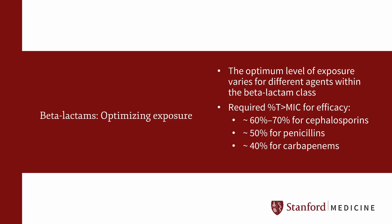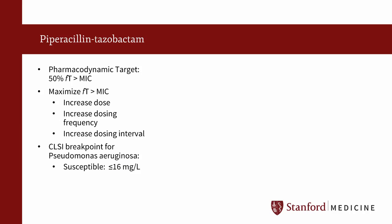To achieve maximal bacterial kill effect, the drug concentration has to be above the MIC 60-70% of the dosing interval for cephalosporins, 50% for penicillins, and 40% for carbapenems. Piperacillin-tazobactam is a commonly used first-line agent, especially for nosocomial infections due to its wide spectrum of activity and safety profile. At the initiation of empiric therapy, the MICs of the organism are often not available and clinicians must rely on the patient's clinical history as well as the institution's local antibiogram. For piperacillin-tazobactam, its activity is optimized when free drug concentration exceeds the MIC for 50% of the dosing interval.